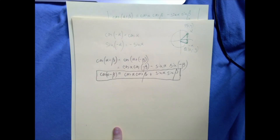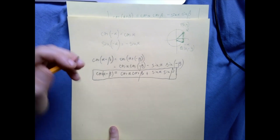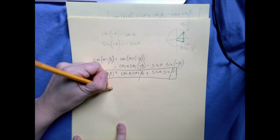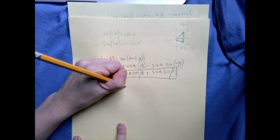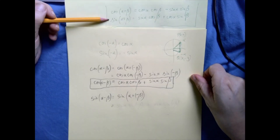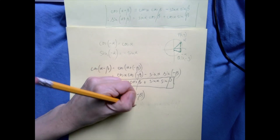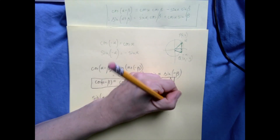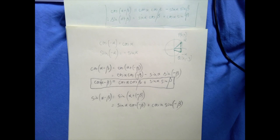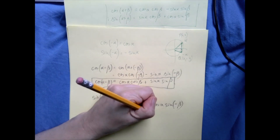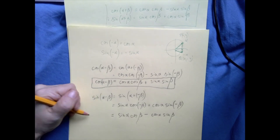We're going to do the exact same thing to derive the difference formula for sine. Sine of alpha minus beta is the same as sine of alpha plus the opposite of beta. By using the sum formula for sine, we get sine alpha cosine(minus beta) plus cosine alpha sine(minus beta). The negative sign inside cosine gets absorbed, giving sine alpha cosine beta. But the negative sign inside sine changes the sign of the second term, so it becomes minus cosine alpha sine beta. That is the difference formula for sine.